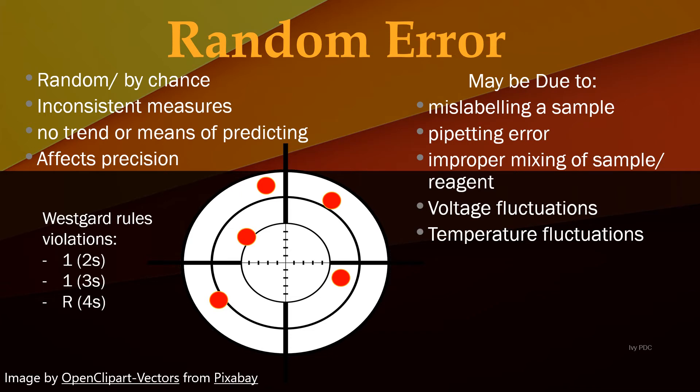All of these different measurements would give a scattered plot because of the different causes of the errors. If a random error occurs, the same mistake may not be made again. The different Westgard rule violations for random errors would be 1-2s, 1-3s, and R-4s.